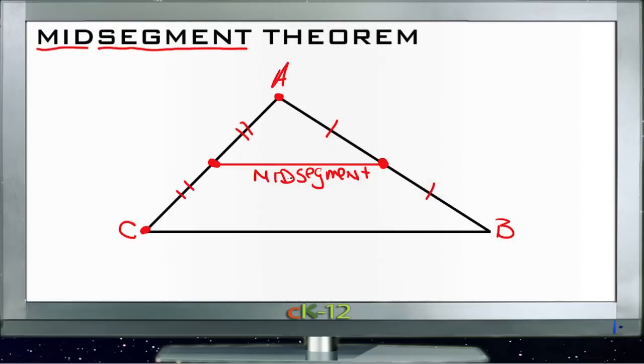When you have a midsegment, there are a number of things about it that are important. First of all, this line, the midsegment, is always parallel to the third side of the triangle. In this case CB, so our midsegment is parallel to side CB.